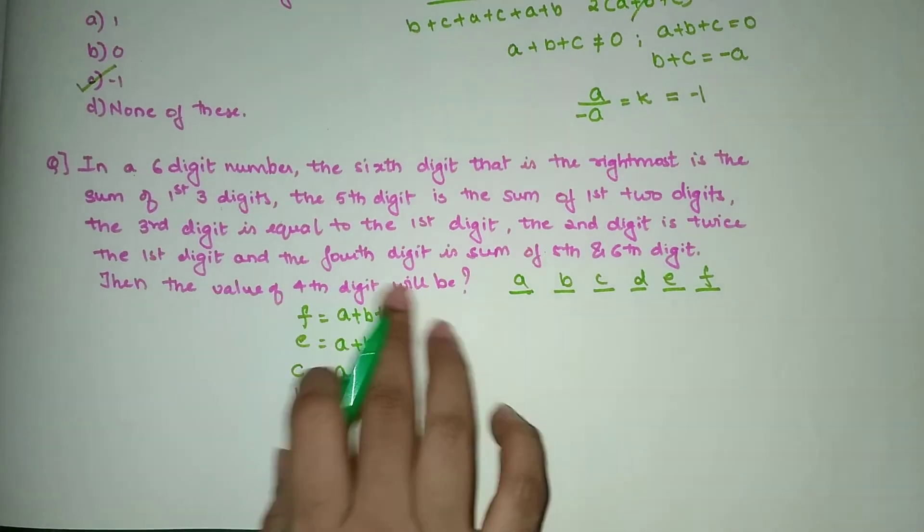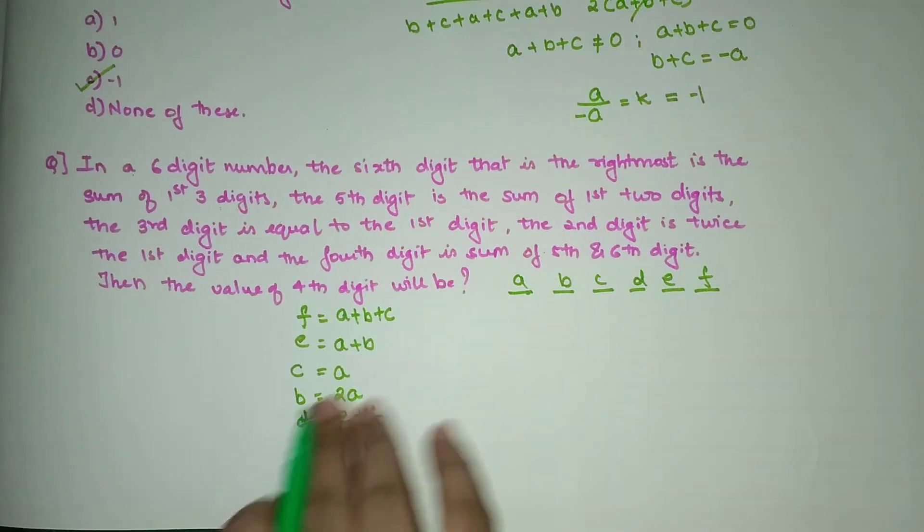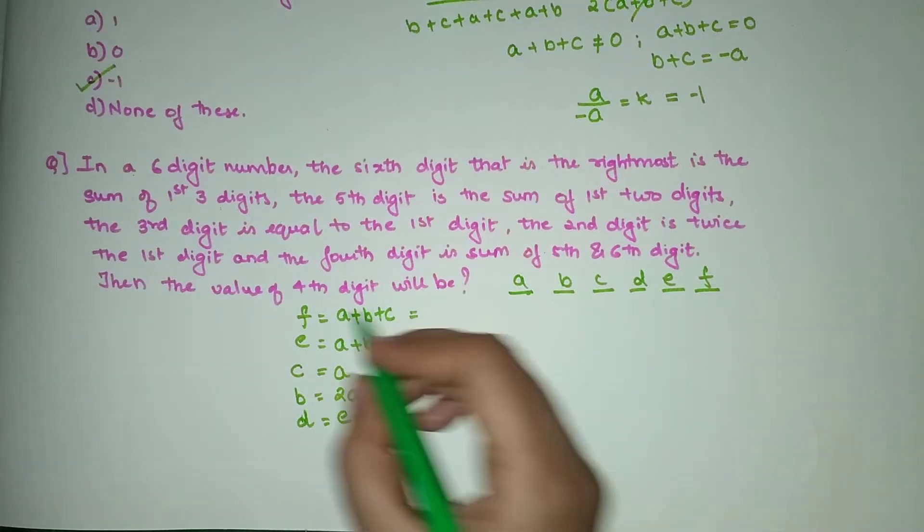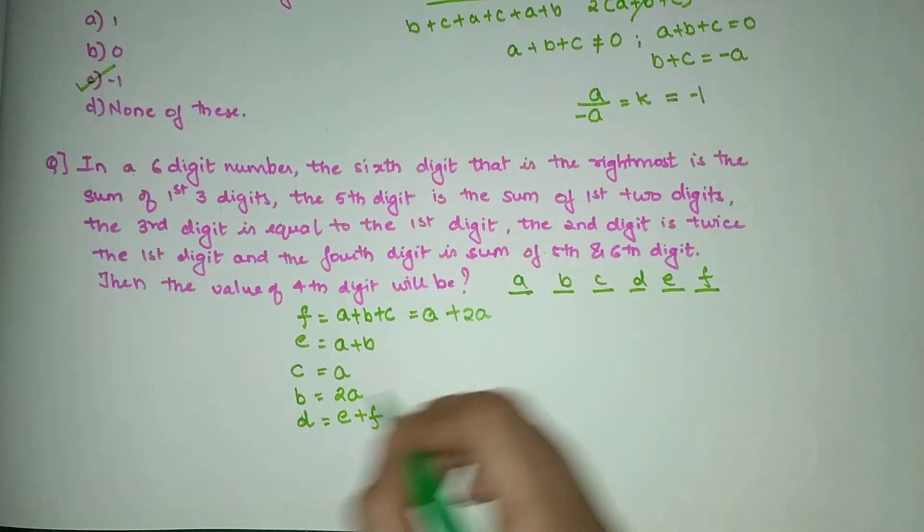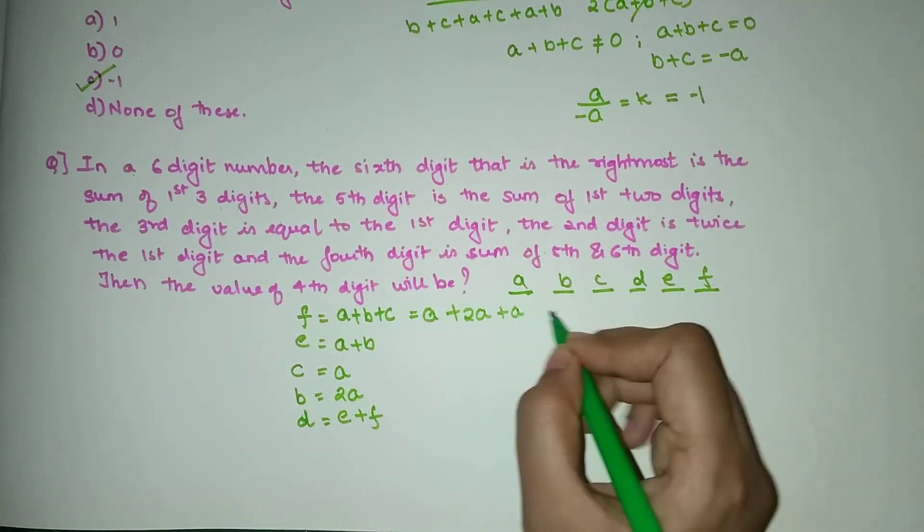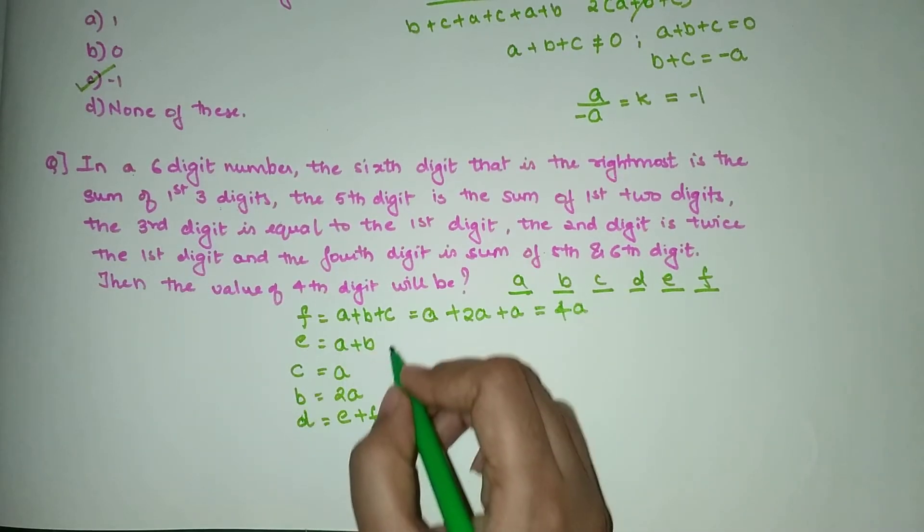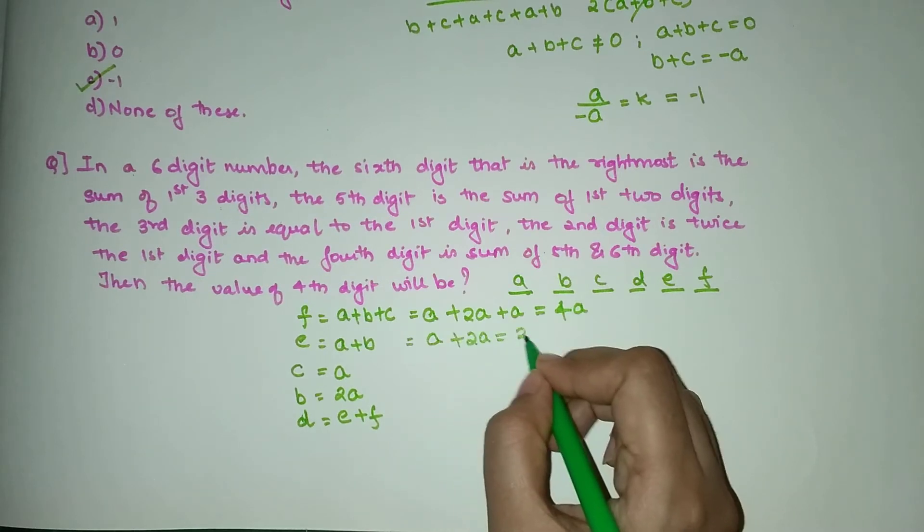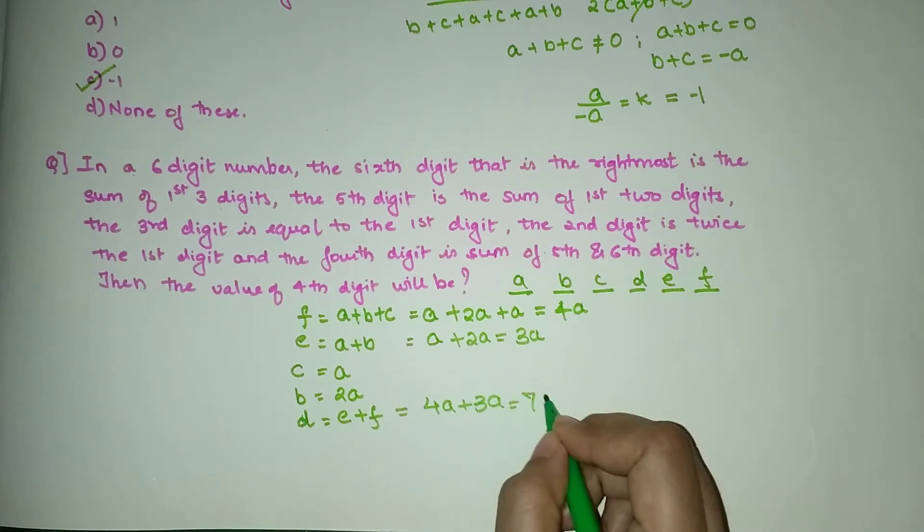Now you wanted to find the value of fourth digit. If you see, everything can be written in terms of first digit. So I can write F as A plus B is 2A plus C is one single A, so you have 4A. And then E can be written as A, B will be 2A, so you are getting 3A. So your final answer is 4A + 3A = 7A.